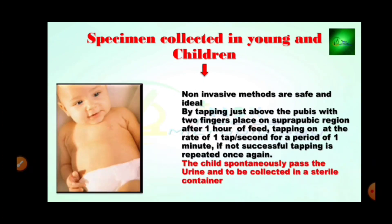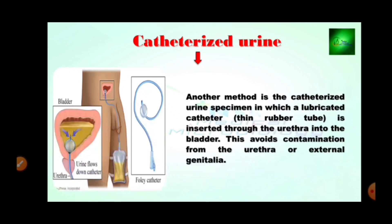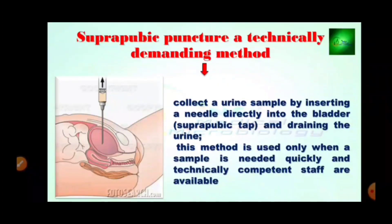For specimen collection in young children, non-invasive methods are safe and ideal by tapping just above the pubis with two fingers in the suprapubic region after one hour of feeding, tapping at the rate of one tap per second for a period of one minute. If not successful, tapping is repeated once again and the child spontaneously passes urine to be collected in a sterile container. Another method is catheterized urine specimen, in which a lubricated catheter is inserted through the urethra into the bladder — this avoids contamination from the urethra or external genital area. The suprapubic puncture method collects a urine sample by inserting a needle directly into the bladder and draining the urine; this method is used only when a sample is needed quickly and technically competent staff are available.